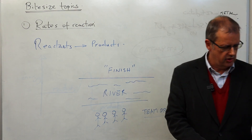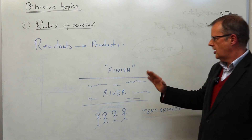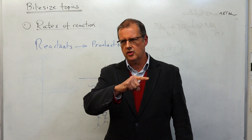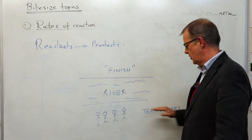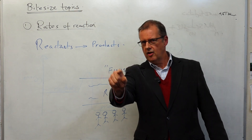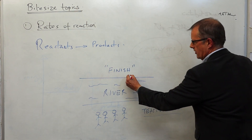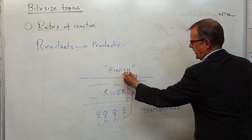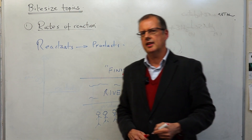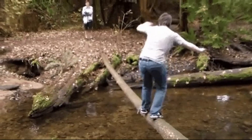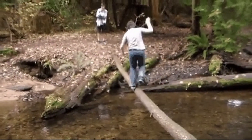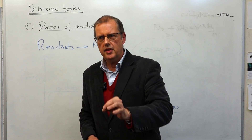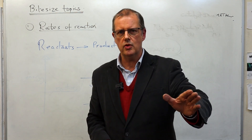So the question I then ask students: what could I do to make that a lot easier? What's a simple solution so this team — Team Brooks — could get across the river easily? And the answer is: build a bridge. A bridge enabling the students to go across to the finish. That is how a catalyst works. It provides an easier route that has a lower activation energy. It doesn't actually lower the activation energy, but it finds a quicker, easier route — an easier way to do the reaction.